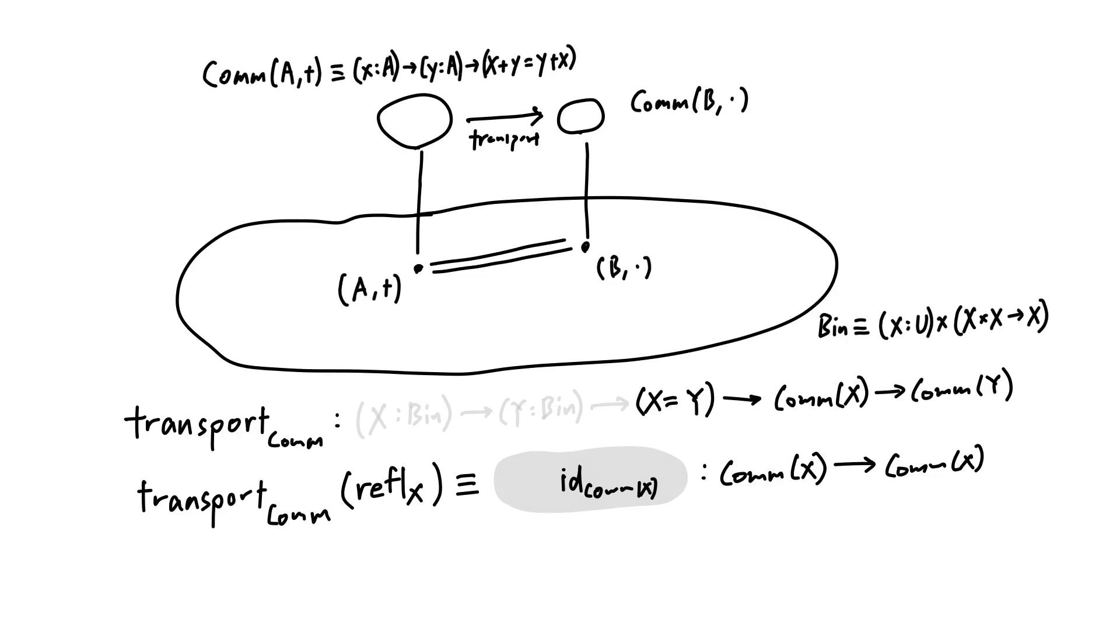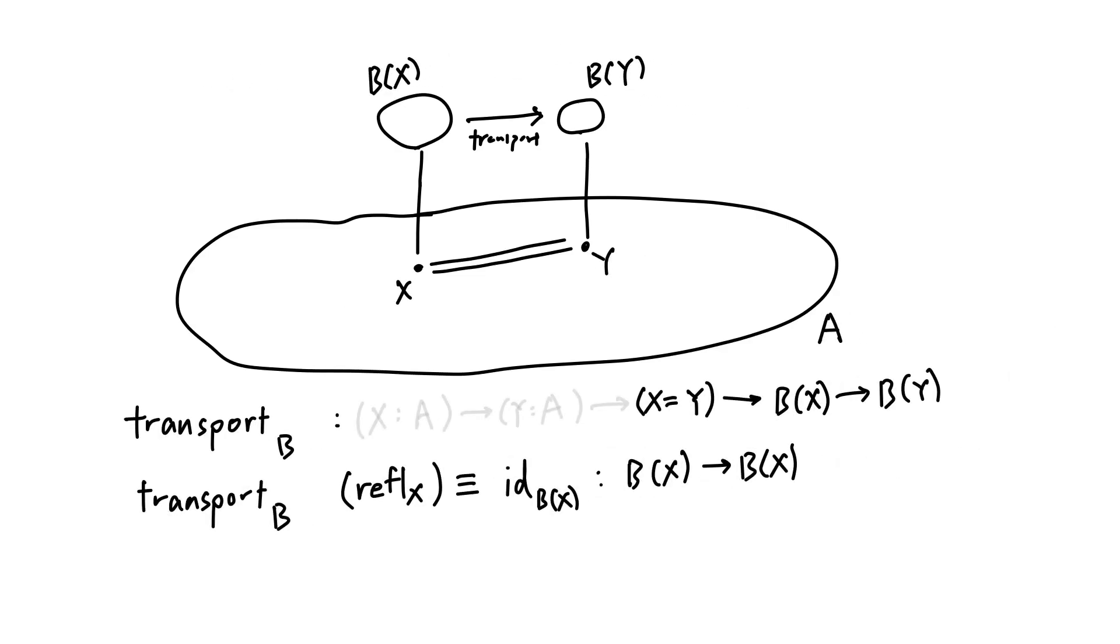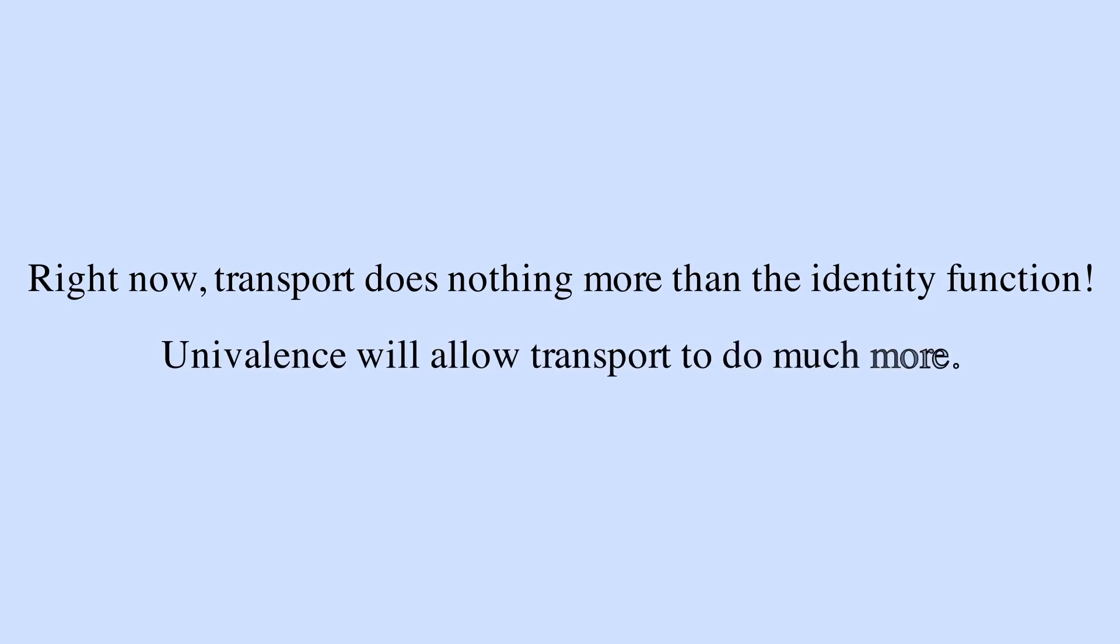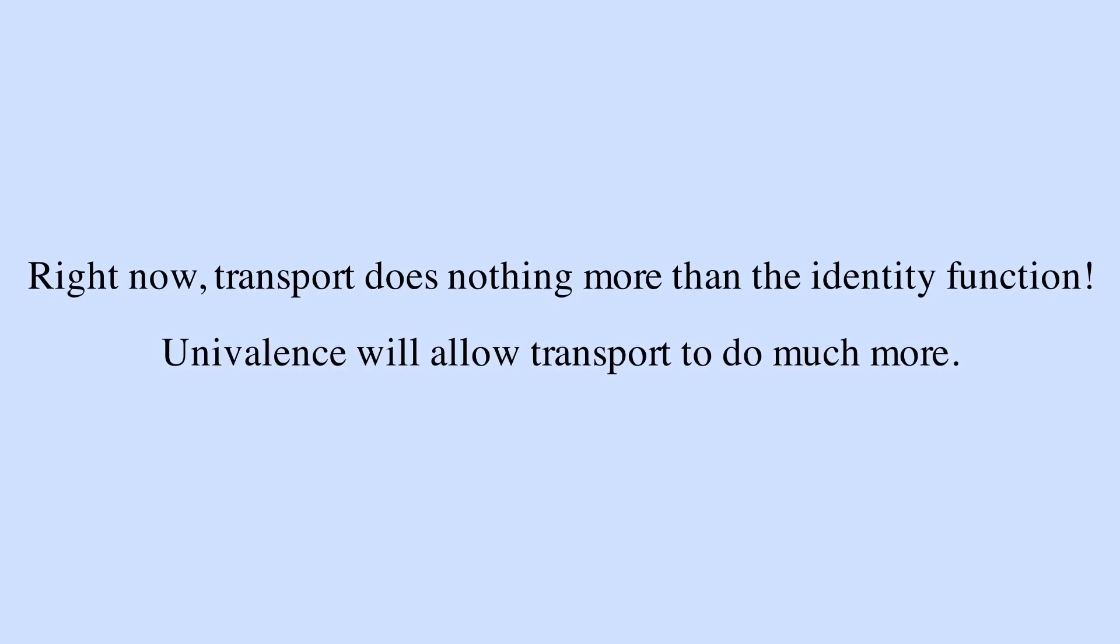Moreover, observe that we can define transport for any type family B over any type A. That's to say, we can transport any property along equalities of any structure. The transport function would have been much more useful if equivalent types are equal. Then we can truly transport properties or even structures on the mug to those on the doughnut. What's holding it back is that the only elements of the identity types are refl, and in which case, transport does nothing more than the identity function. The power of the univalence axiom exactly comes from the fact that it introduces additional elements of the identity type, allowing equivalent things to be equal, realizing the potential of the transport function.